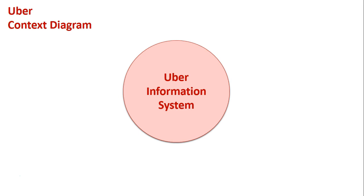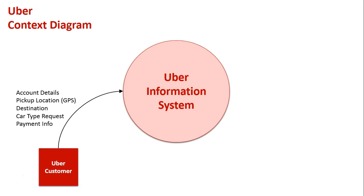Now, who are our external entities? The first one would be the Uber customer — someone who wants to get an Uber car or taxi to come to their house, pick them up, and take them to a destination. The type of data they need to give the system: they firstly need to set up an account with details such as their name, address, phone number, and payment info.